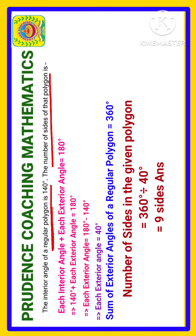That gives us 9, meaning the number of sides in that particular polygon is 9. The sum of all exterior angles divided by the value of each exterior angle gives the number of sides. So 9 is our final answer.